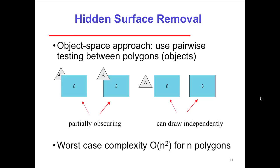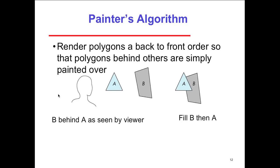Hidden surface removal has an object space approach using pairwise testing between polygons. We have a partially obscured object — we can draw objects independently or together. Worst case complexity is O(n²) for n polygons. Hidden surface removal essentially just removes surfaces that are hidden and don't need to be rendered — they don't take up space, computation in the pipeline, or memory. The painter's algorithm renders polygons in back-to-front order.